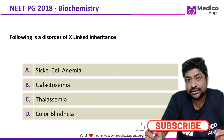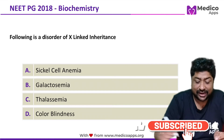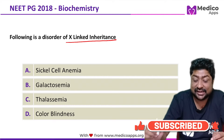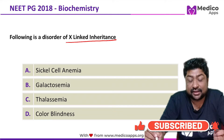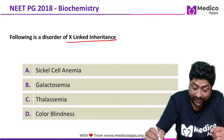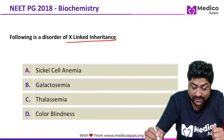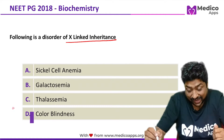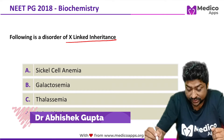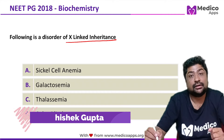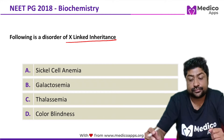This question appeared in NEAT PG 2018 and it talks about which of the following has an X-linked inheritance. Your options are A. Sickle Cell Anemia, B. Galactosemia, C. Thalassemia, and D. Color Blindness.